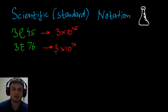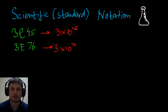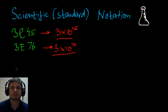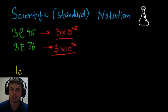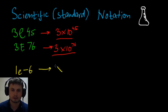In other words, 3E76 is 3 followed by 76 zeros, which is a huge number. Because we have no name for it, we have to use this notation to express it. The same applies to really small numbers. Sometimes when you're doing a physics assignment you may get an answer like 1E-6, which means 1 multiplied by 10 to the power of minus 6.